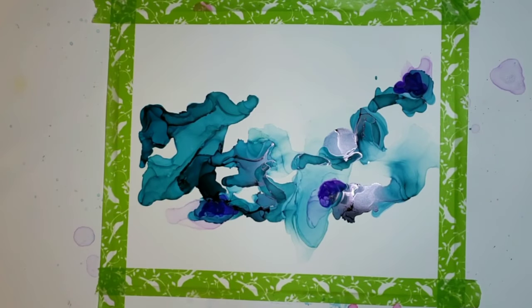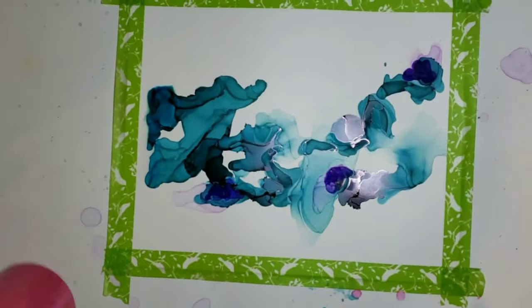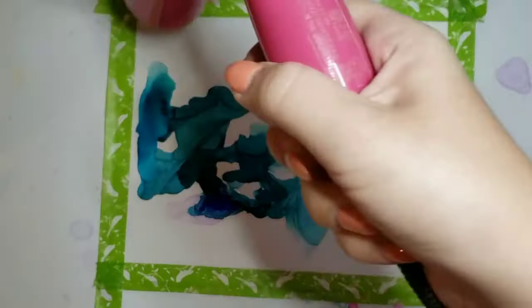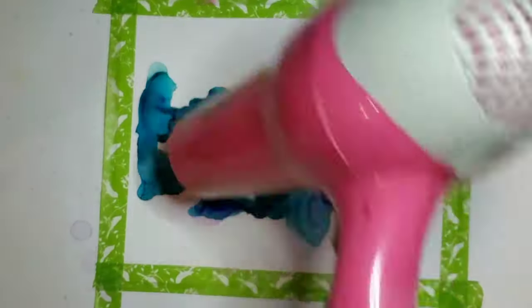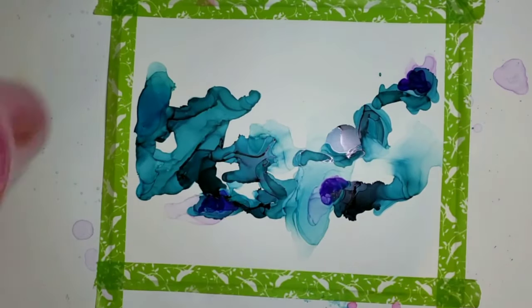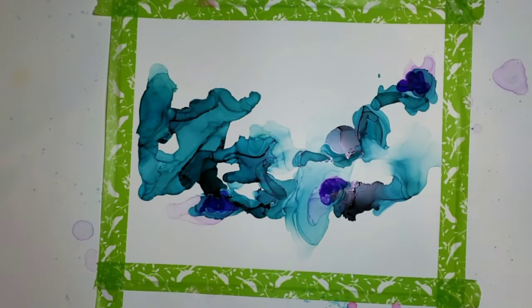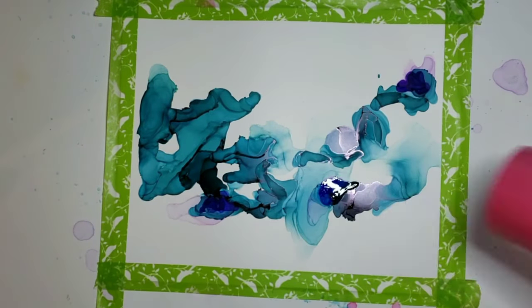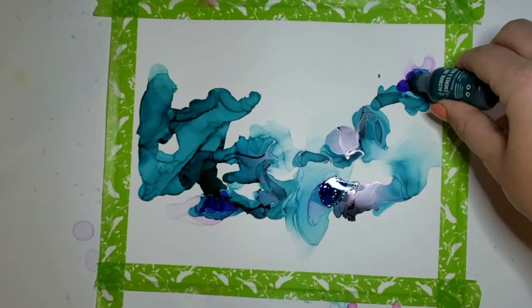Here I just went back to that very first area and added a lot of alcohol to it. Even after all that time under the blow dryer it was able to re-wet that area and make that ink be workable again, which is one of the really cool and unique parts of working with the alcohol inks.